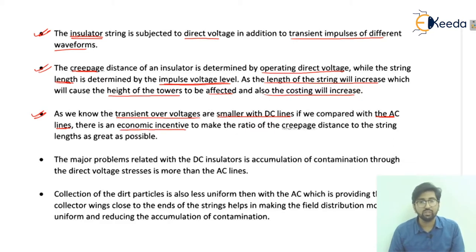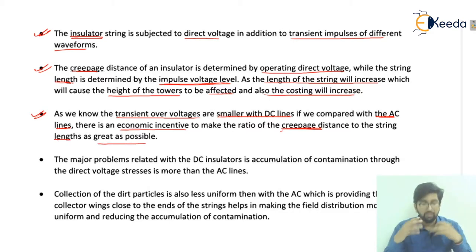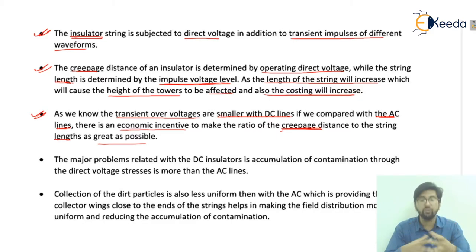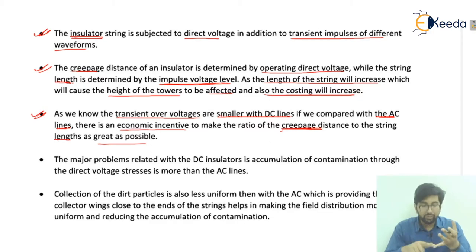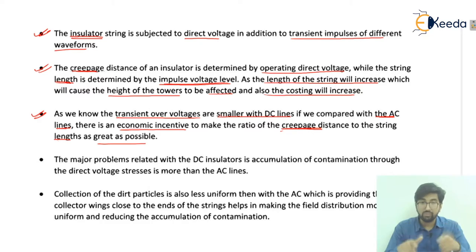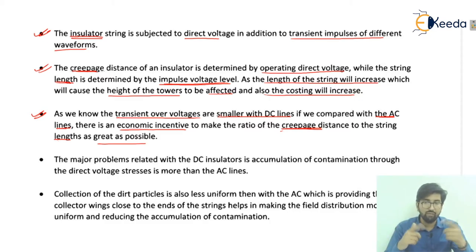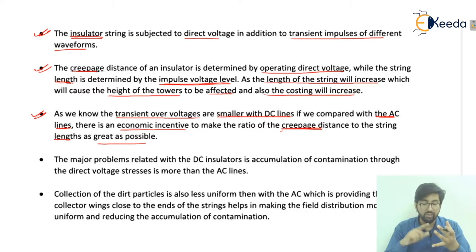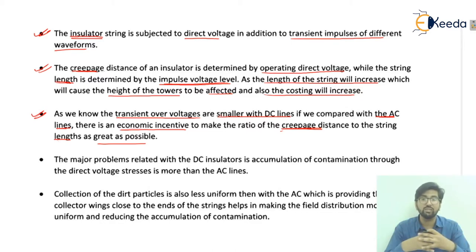There is an economic incentive to make the ratio of the creepage distance to the string length as great as possible. If we are designing insulators for DC lines, the simple thing we need to know is that if the ratio of creepage distance to string length is more, then it will be economical. Otherwise the costing increases due to the height of the tower. We have to maintain this ratio to keep the economic incentive.